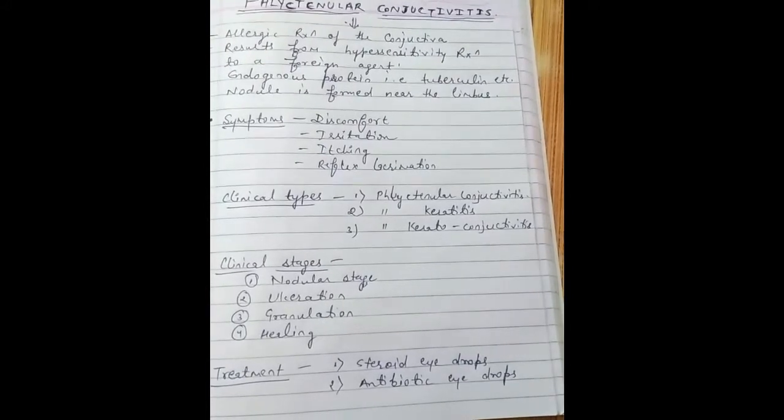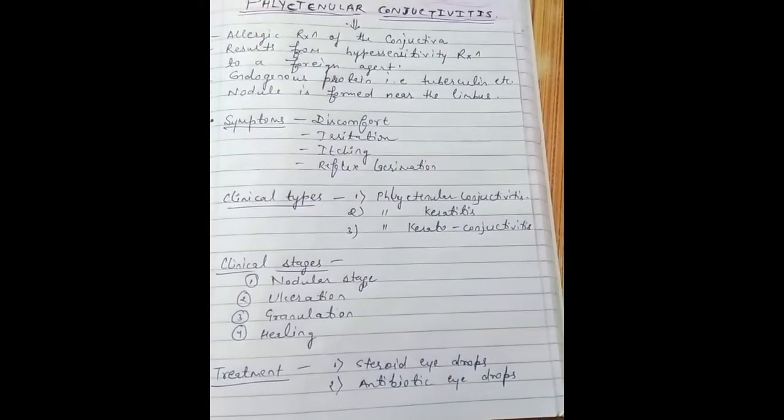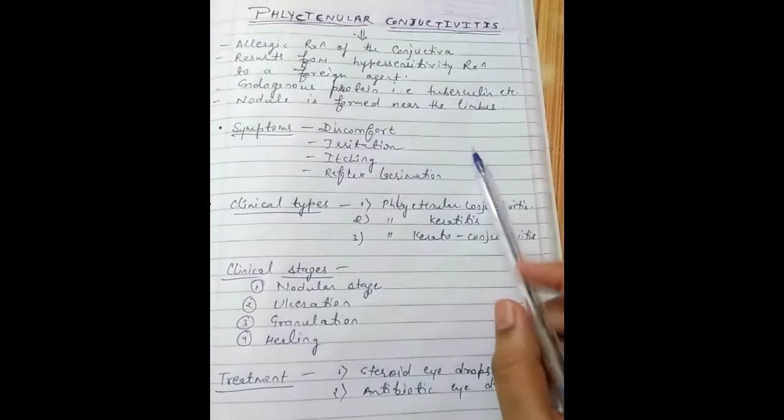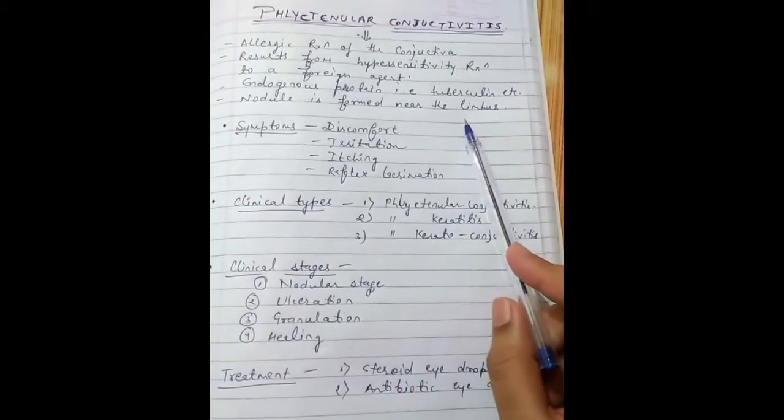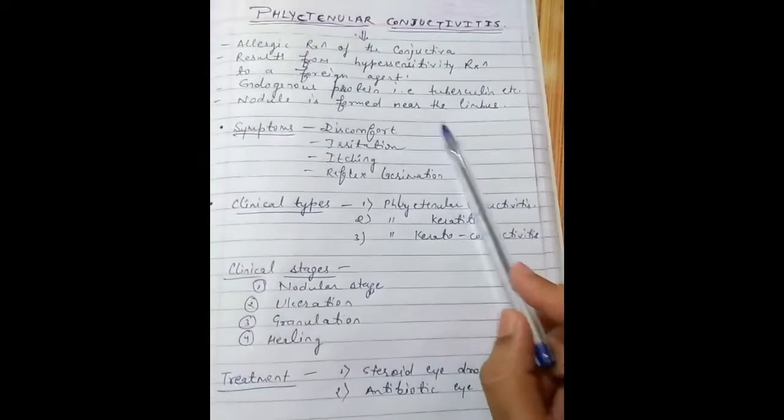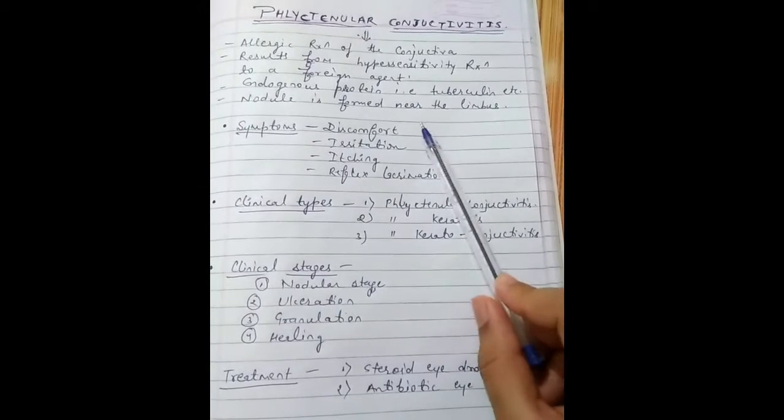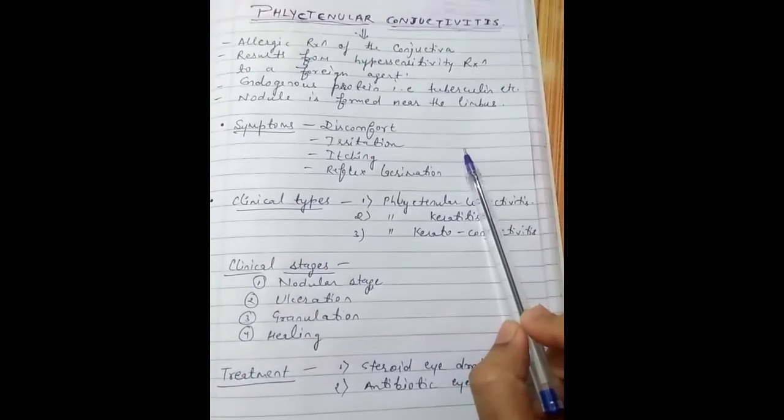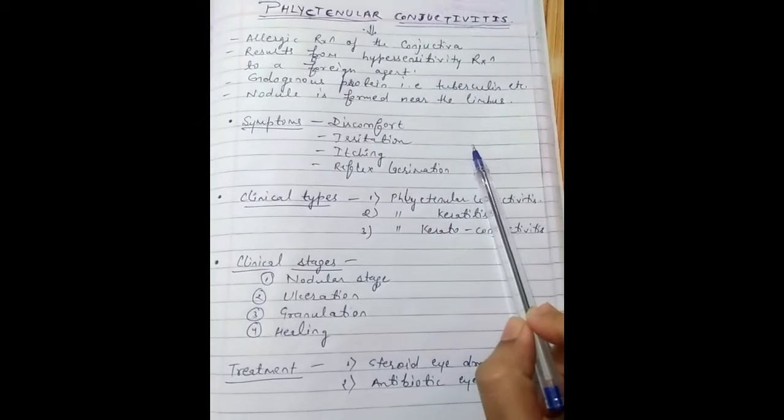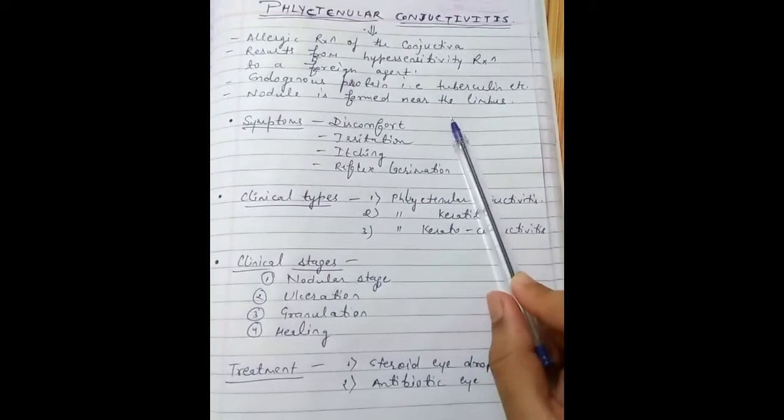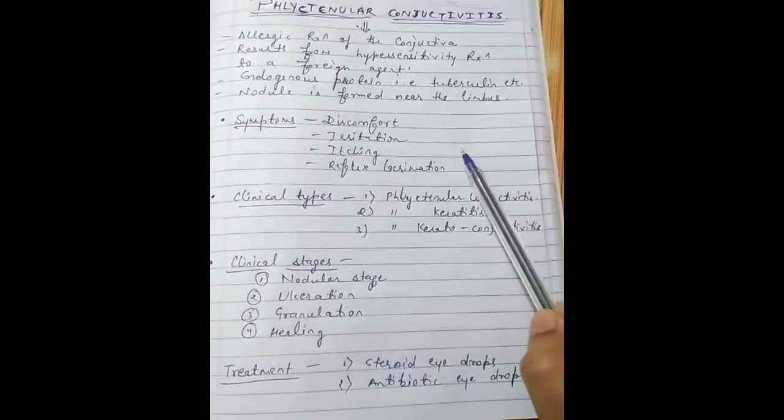This occurs in people who are living in unhygienic conditions and suffer from malnutrition, so it is most commonly seen in children.